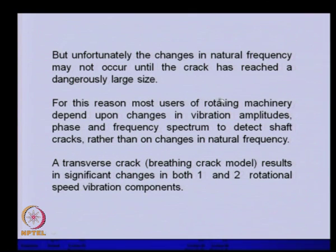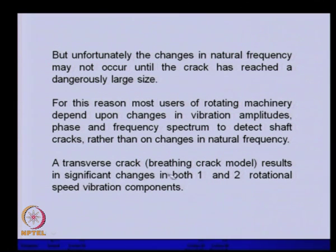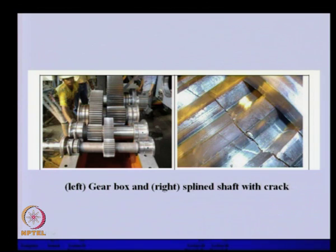Unfortunately, changes in natural frequency may not occur until the crack has reached a dangerously large size. For this reason, most users of rotating machines depend on changes in vibration amplitude, phase, and frequency spectrum to detect shaft cracks rather than changes in natural frequency. A transverse or breathing crack — which continuously opens and closes during vibration — results in significant changes in both 1x and 2x vibration components. In the case study of the cracked shaft, the vibration was measured at the housing, so the crack behavior was not directly captured; measuring closer to the shaft would have given a better indication.